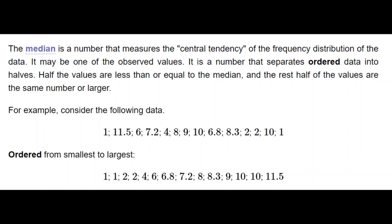As an example, we look at the following data. Here we see 14 numbers, which is an even number of data. Among the 14 numbers, we can't directly see the median. So to find the median, we order the data from smallest to largest, which we have done in the second row of data.